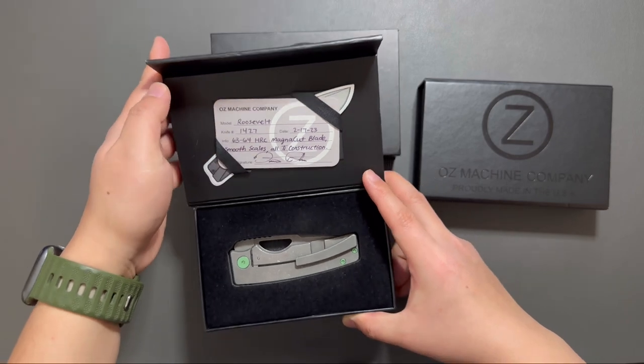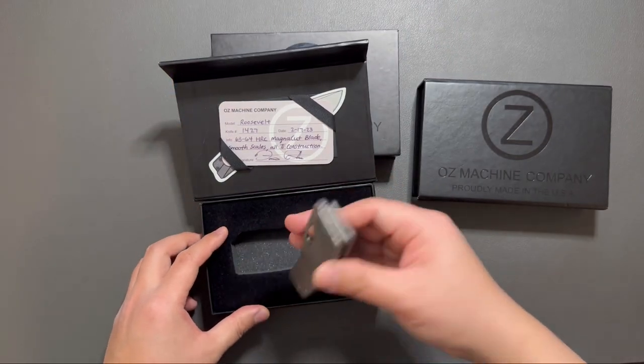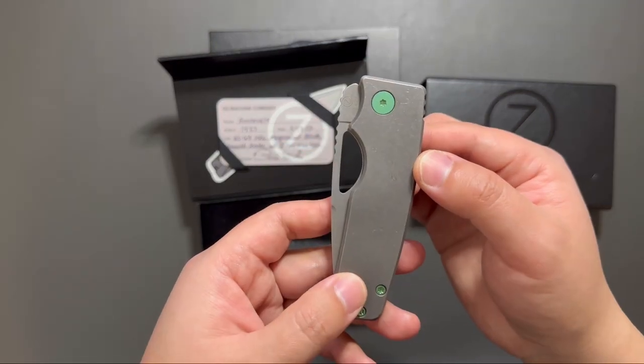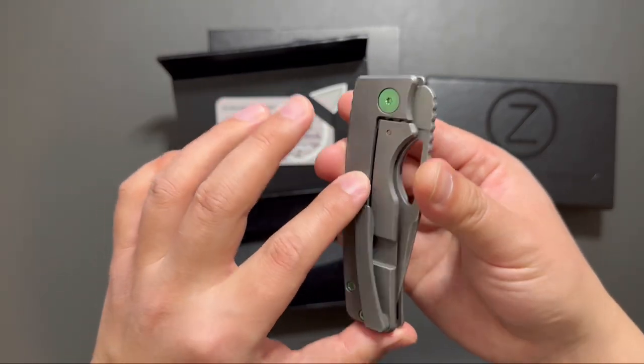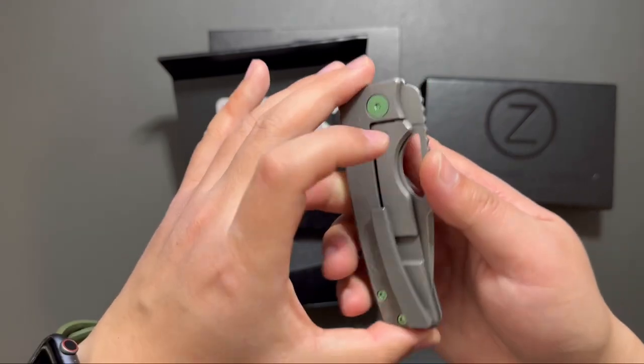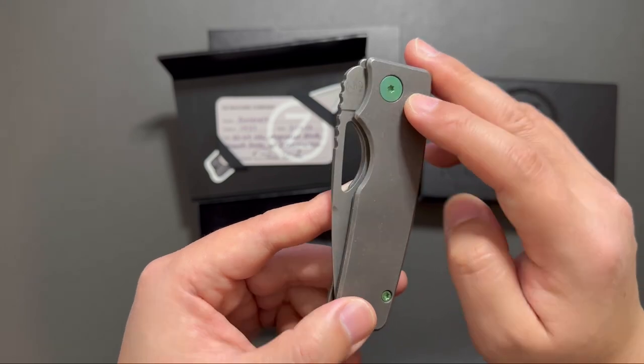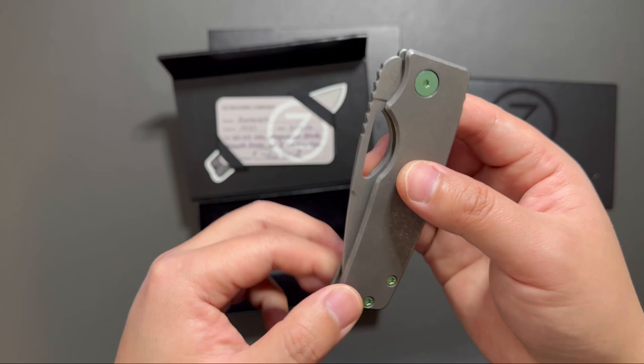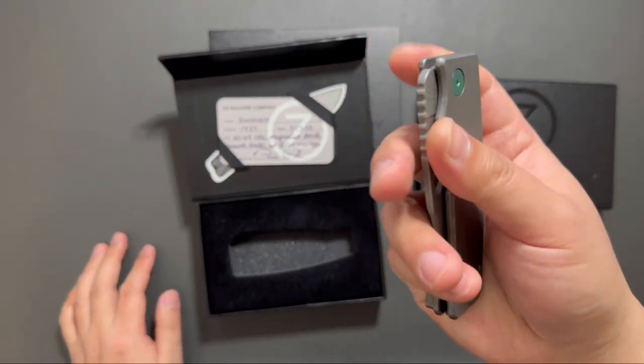Smooth scales, old tie construction. You can see it's a dark stonewashed, both the scale and the blade and also the clip. As you can see it also has green anodized hardware. First impression is really light.